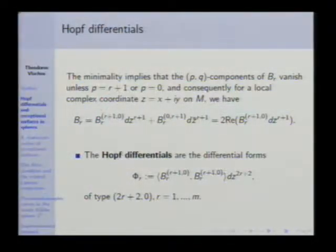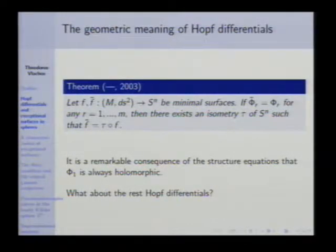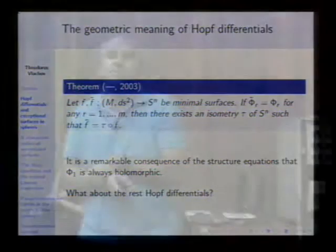What are these differential forms? By definition, they are forms of type (2L+2, 0). The question is: what kind of information do these invariants encode for minimal surfaces? The answer is that they play the role that Frenet-Serret invariants play for curves in Euclidean space. If two minimal surfaces have the same Hopf differentials, then they are congruent.